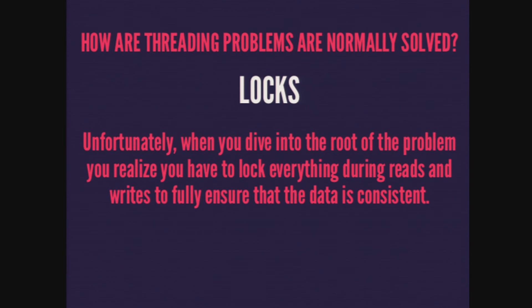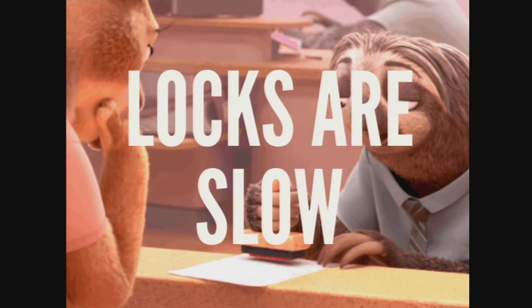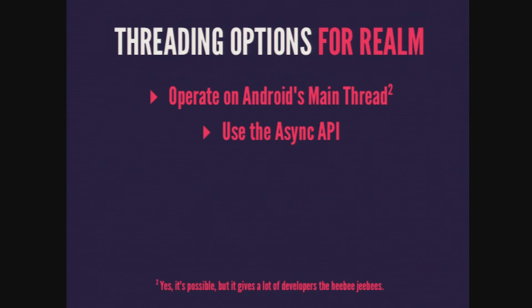There are threading options for Realm. You can operate on Android's main thread — it's possible because of how Realm is architected, and a lot of people have done it. But Google has done a great job advocating against doing anything on the main thread because it will slow things down, so nobody likes to do it. The secondary option is to use the asynchronous API, where everything is done in a background thread and Realm shuffles things for you behind the scenes.